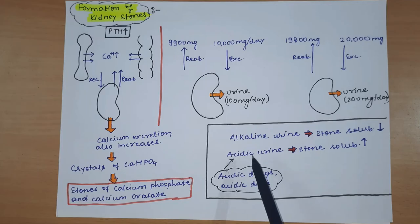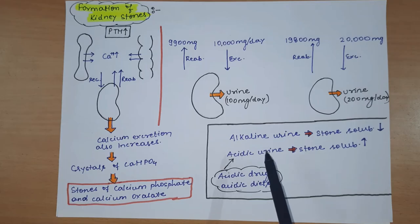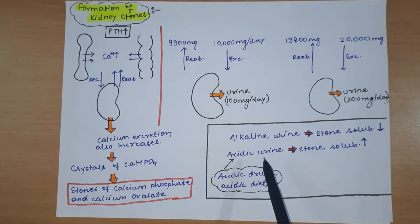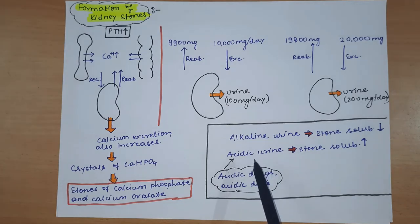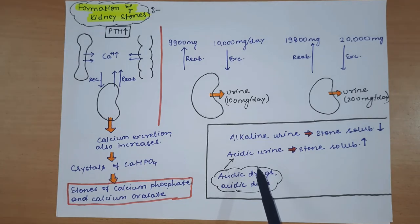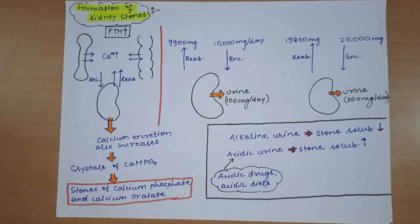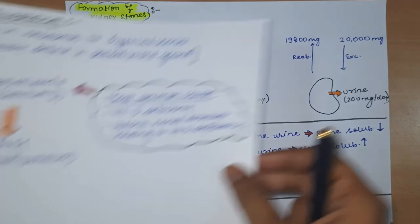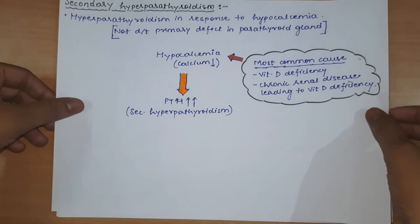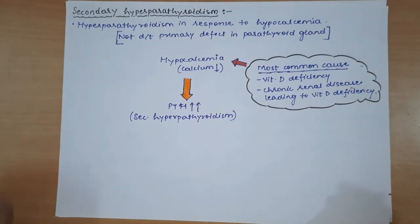We divide hyperparathyroidism into two parts - primary and secondary - on the basis of cause. If the cause is an abnormality of the parathyroid gland itself, the most common cause being tumor development, this is called primary hyperparathyroidism. The next part is secondary hyperparathyroidism.